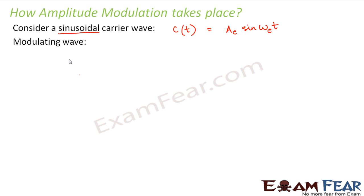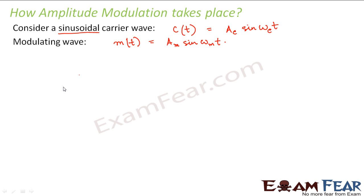We also need a modulating wave, or the message signal wave, because the message signal wave is the one which actually modulates the carrier wave. That is why it is also known as the modulating wave. This is denoted as m of t, which is equal to AM sine omega-m t, where AM is the amplitude of the modulating wave and omega-m is the angular frequency of the modulating wave.